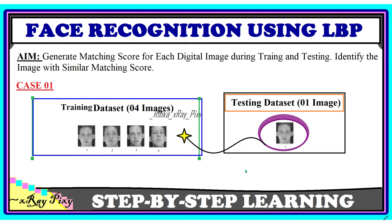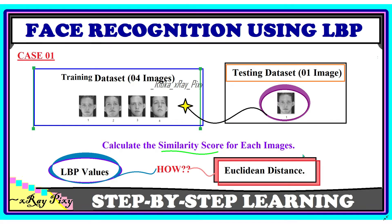In Case 1, suppose the training dataset has four images. In the testing dataset there is one query image that we are searching for. As humans we can easily see this image is present in the training set. Our task is to determine how the computer will decide whether this image is present in the training dataset or not.